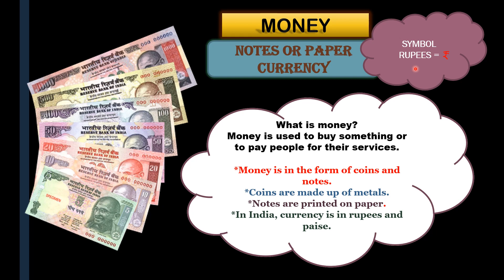Let's understand what is the meaning of money. Money is used to buy something or to pay people for their services. As explained in yesterday's class, through money we can buy anything or pay people for their good service. Money is in the form of coins and notes. Yesterday you saw the coins, and today you will be studying about the notes. Money can be in two forms: one is coins and the other is notes.